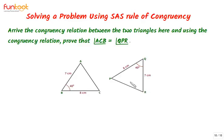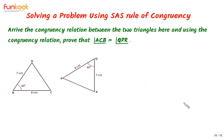Let's discuss the approach for solving this question. First, we will look at the given data. From the given data, we will prove that the two triangles are congruent by the SAS relation, and then by using CPCT — corresponding parts of congruent triangles — we will prove that angle ACB is equal to angle QPR.